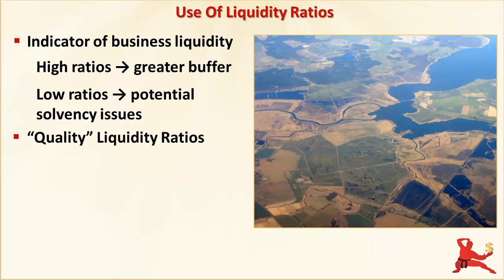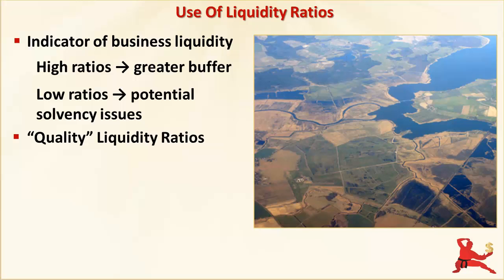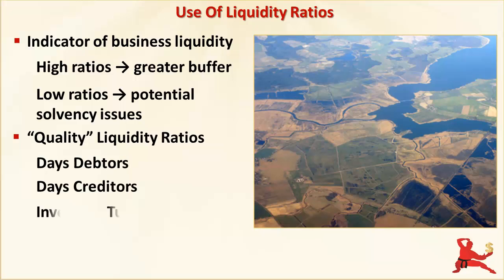Just because a business has healthy looking liquidity ratios, it doesn't necessarily mean that the business is very liquid. In an aerial view of a landscape, you can see if there's water around or not, but you can't tell how deep the water is or whether the rivers have a healthy flow or are stagnant unless you go in closer. So it's the same with a business. You need to look more closely at the quality of the assets and liabilities that make up the current and quick asset ratios. To do this, you use quality indicators like days debtors, days creditors and inventory turnover. These ratios combine information from both the profit and loss and the balance sheet.